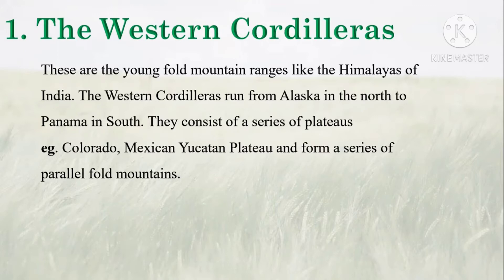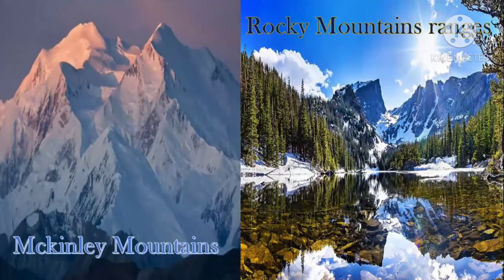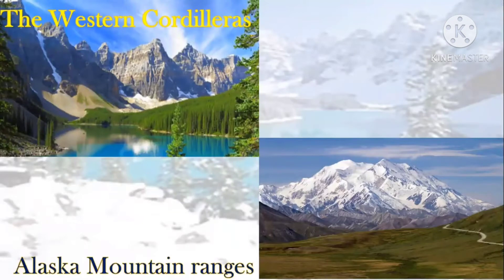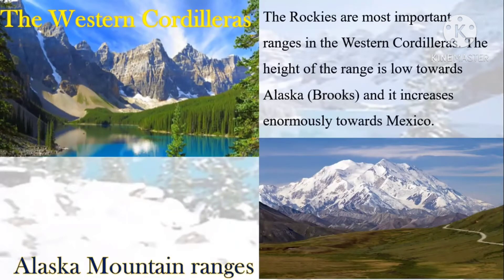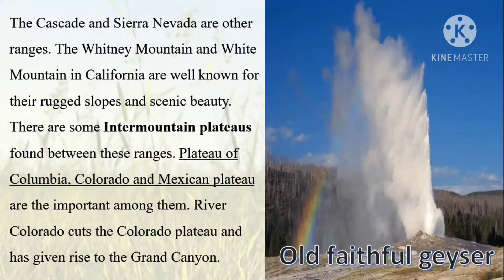The western cordilleras consist of a series of plateaus, for example the Colorado and Mexican Yucatan Plateau, and form a series of parallel folded mountains. The Rockies are the important ranges. Mount McKinley at 6,194 meters is the highest peak, and Death Valley is the lowest part of this region. The Cascades and the Sierra Nevada are the other ranges.